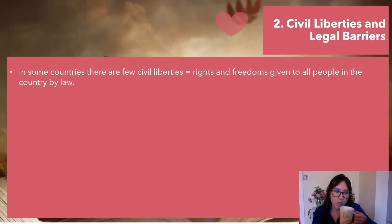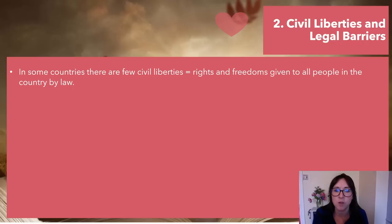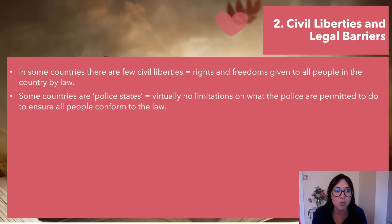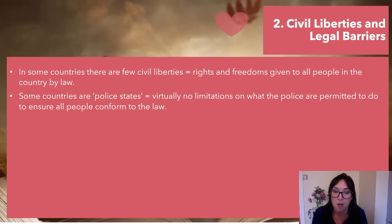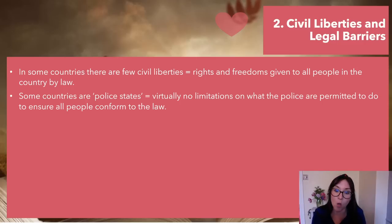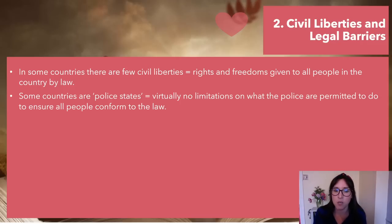Civil liberties and legal barriers. In some countries there are few civil liberties — rights and freedoms given to all people by law. Some countries are police states with virtually no limitations on what the police are permitted to do to ensure conformity to the law. Places like Saudi Arabia are very much run by the police; you do not want to mess with them because they have very little limitations. They are very much a crime control area — you are guilty before you are innocent.